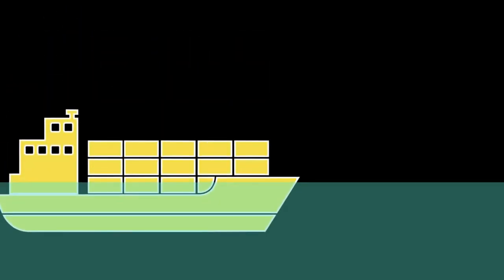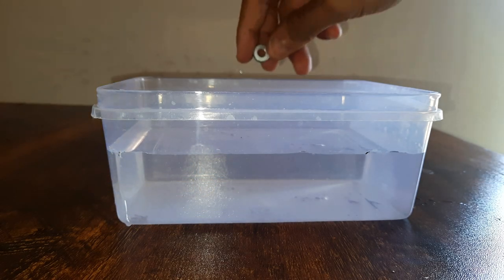How is it that an extremely heavy ship made of metal floats on water, but a tiny piece of metal like a spanner easily sinks into it? Let's understand this through an activity.